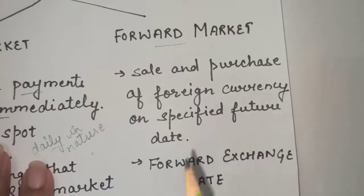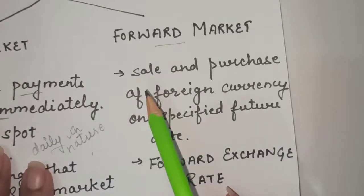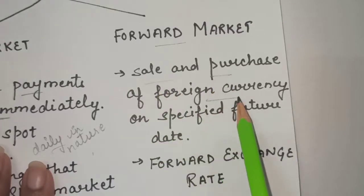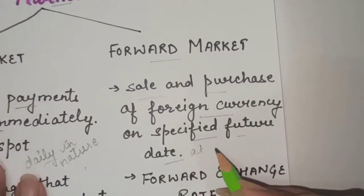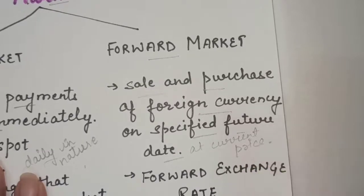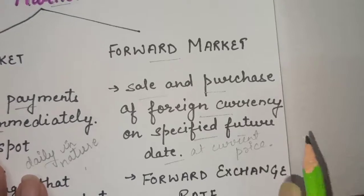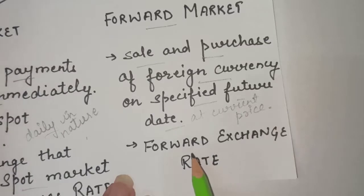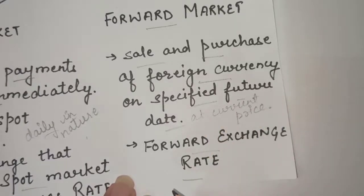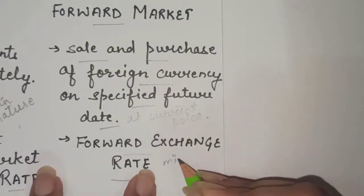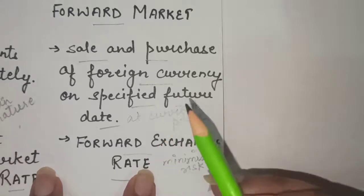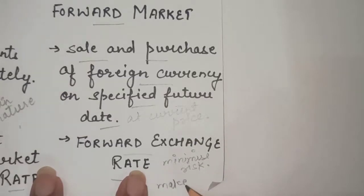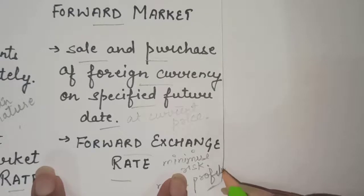The second kind is the forward market. In the forward market, sale and purchase of foreign currencies is settled on a specified future date at a rate agreed upon today — that is, at the current price and exchange rate — as is done in the hedging function. The exchange rate that prevails in such a market is known as the forward exchange rate. Such contracts are entered for two reasons: first, to minimize the risk which may occur due to variations in exchange rates; and second, to make profits.